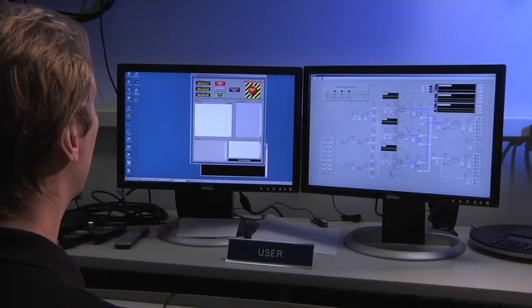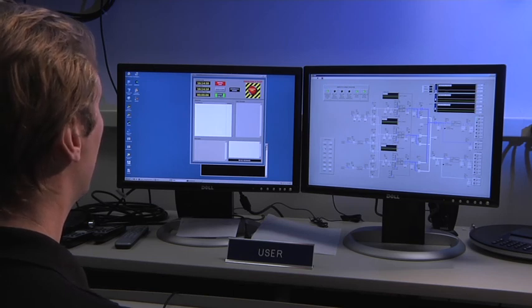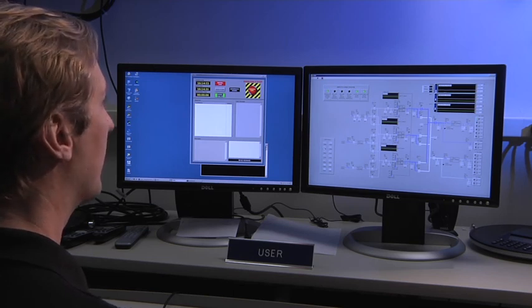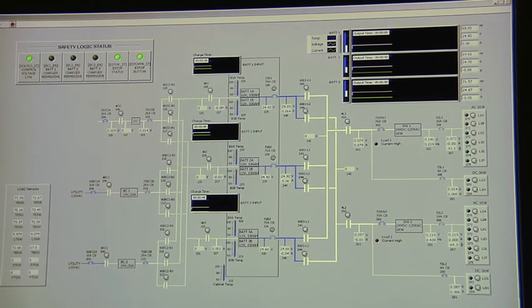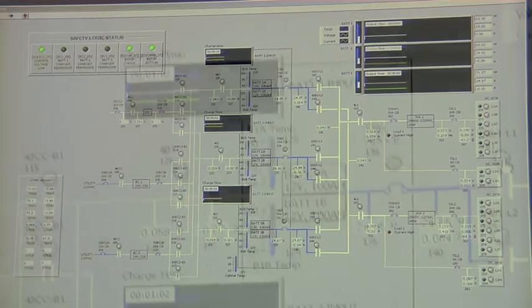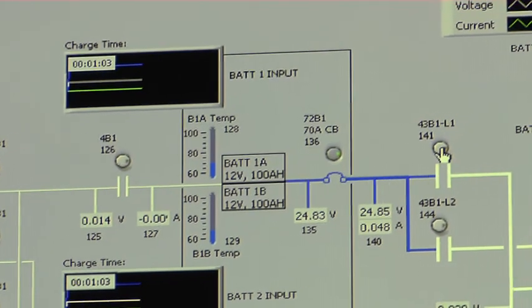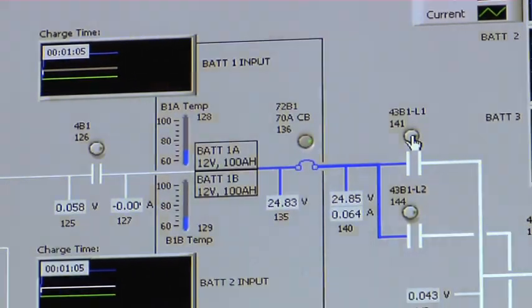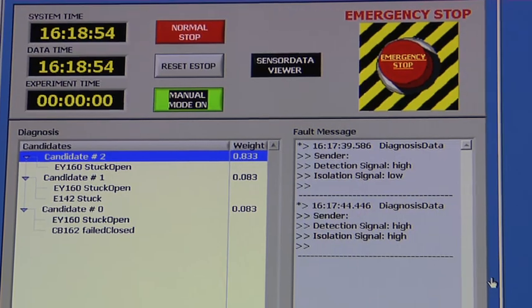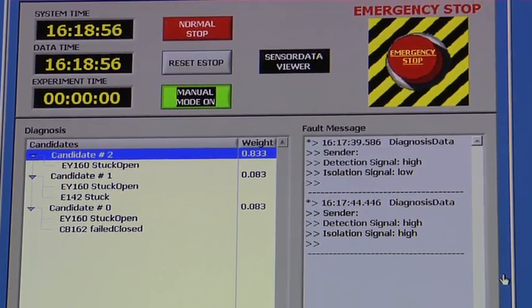We are currently using Hyde in the Integrated Vehicle Health Management Project, which is part of the Aviation Safety Program. In that project, we are diagnosing the behavior of electrical power systems, which are naturally hybrid in nature. It has continuous behavior as well as discrete behavior. Hyde is being used to reason about the state of the system and determine if there are any faults that are present in the system, given commands to the system and feedback from sensors that are observing the system behavior.